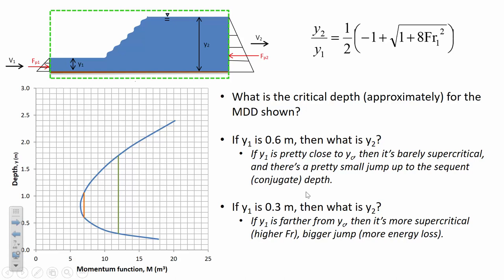If Y1 and YC are far apart, that sets up a very vigorous, distinctive jump where there's a lot more energy loss, because you're starting with a higher Froude number. A student asks: would the length of the green line be the height of the hydraulic jump? Yes — that line length is the difference in elevation between Y1 and Y2. If you extend a horizontal line from Y2 and measure down to the water surface, that's the height of the jump.